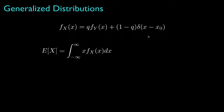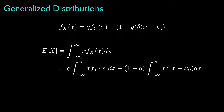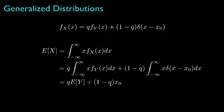We can evaluate the expected value for this random variable in exactly the same way that we always evaluate expected values. When we carry out the mathematics, we'd find that the result is equal to q times the expected value associated with the density y, plus 1 minus q times the expected value for the discrete random variable, which can take only one value, so its expected value is x0.